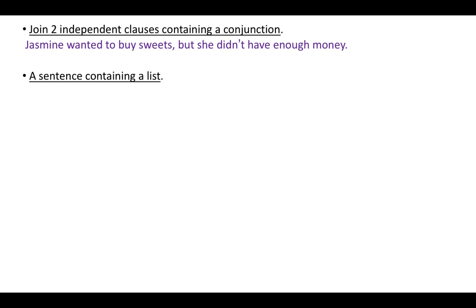An example of commas used in a sentence containing a list includes: 'I bought apples, oranges, grapes and tomatoes.' This is a list of fruits. However, the list can contain anything — items, verbs or even adjectives. So as long as you have a list in a sentence, commas are required. Remember, a comma is not required just before the word 'and'.